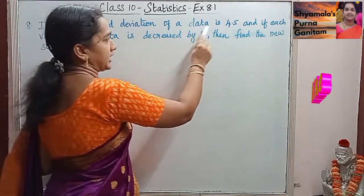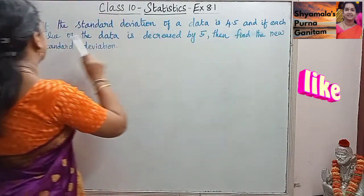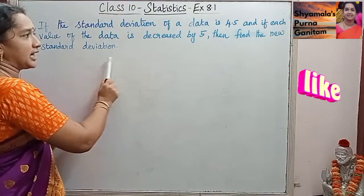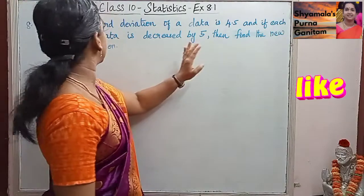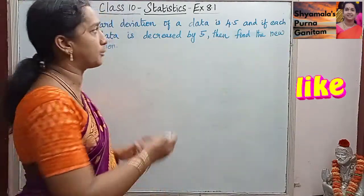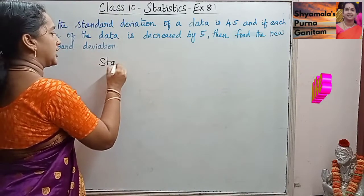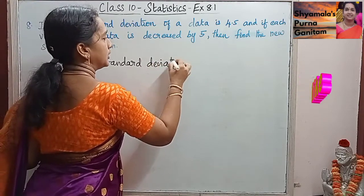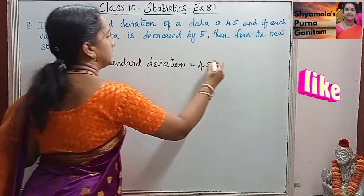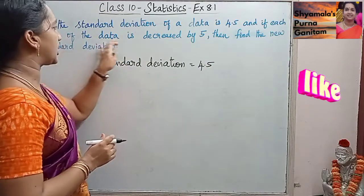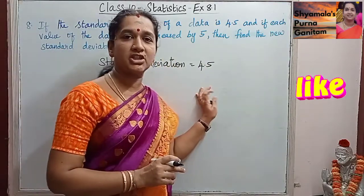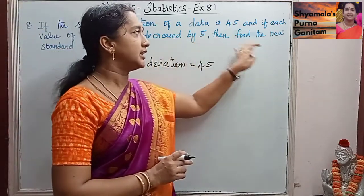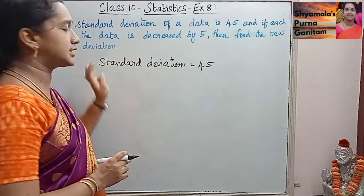If the standard deviation of a data is 4.5, and if each value of the data is decreased by 5, then find the new standard deviation. The standard deviation of the given data is 4.5. We don't know how many data points there are, but only the standard deviation is given. If each value is decreased by 5, find the new standard deviation.